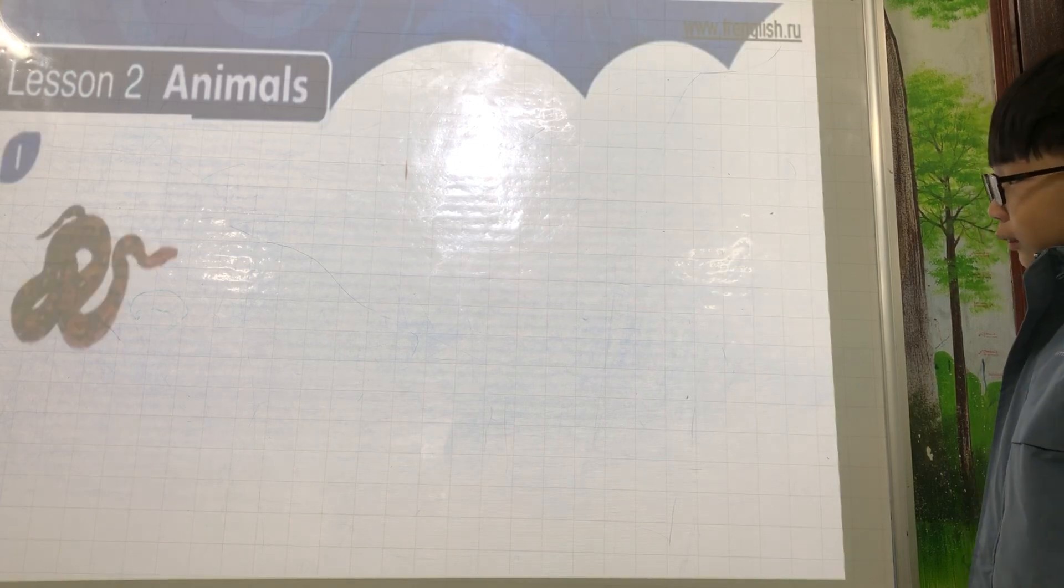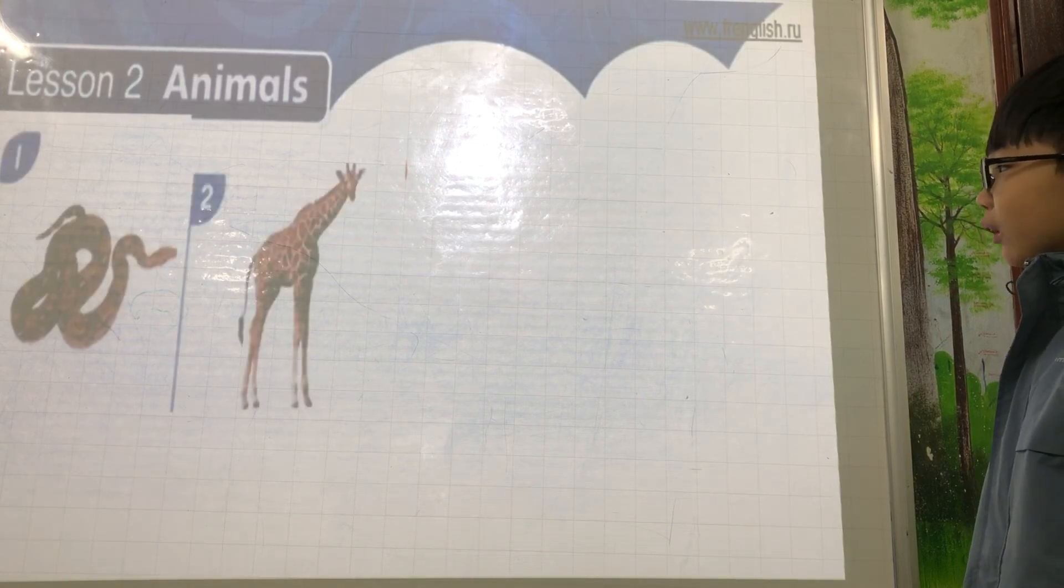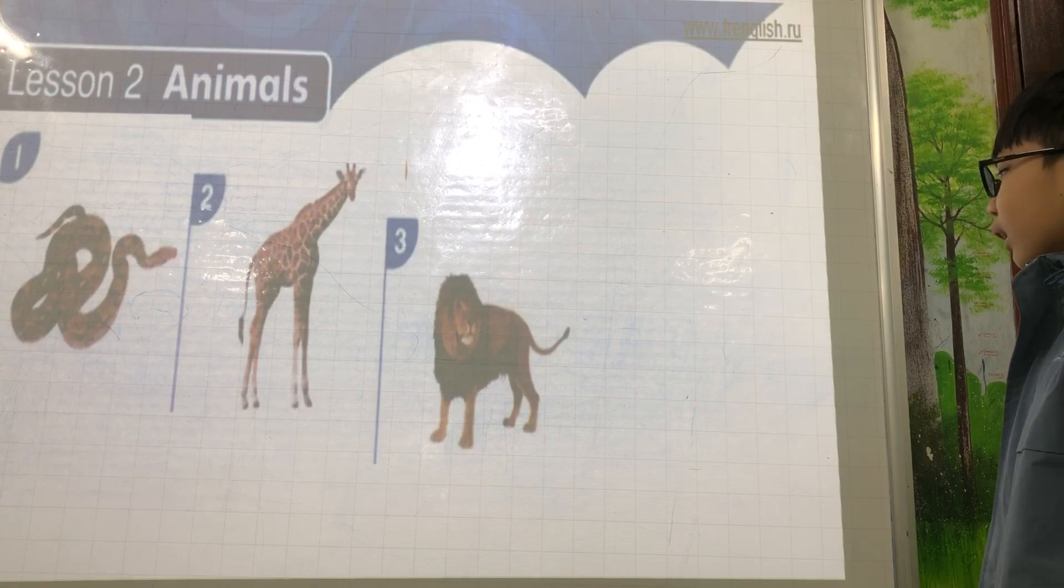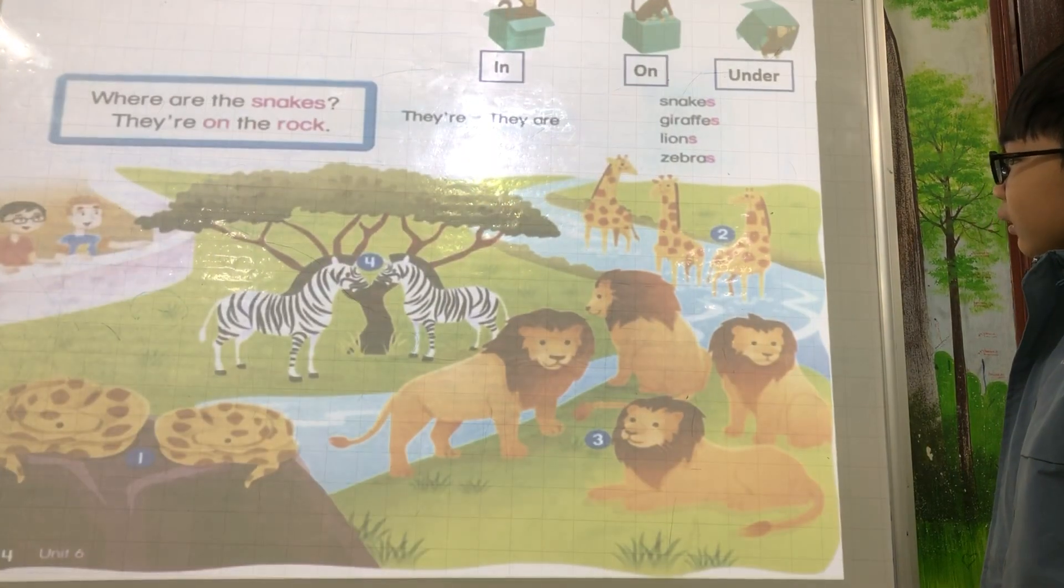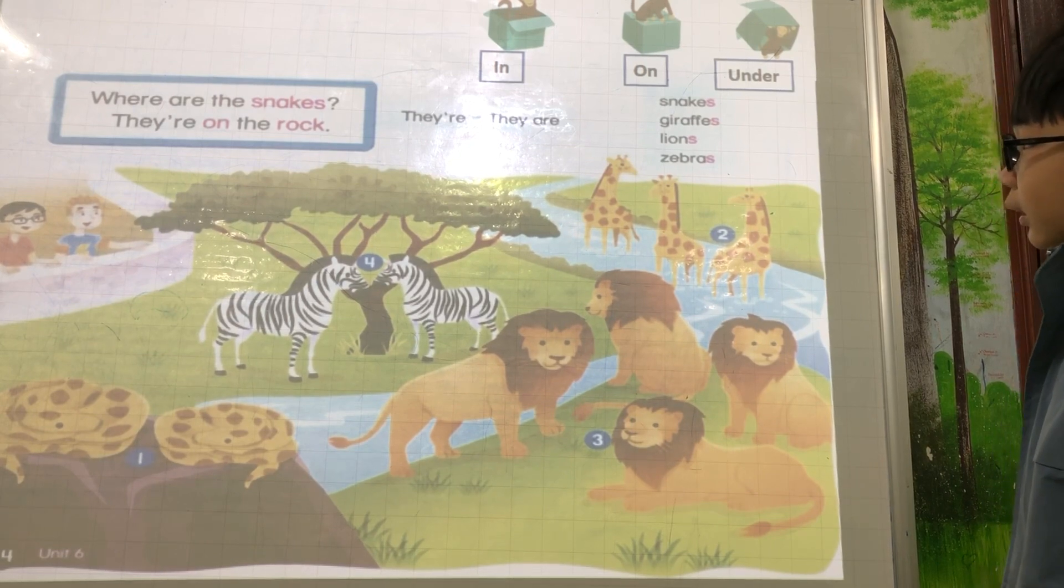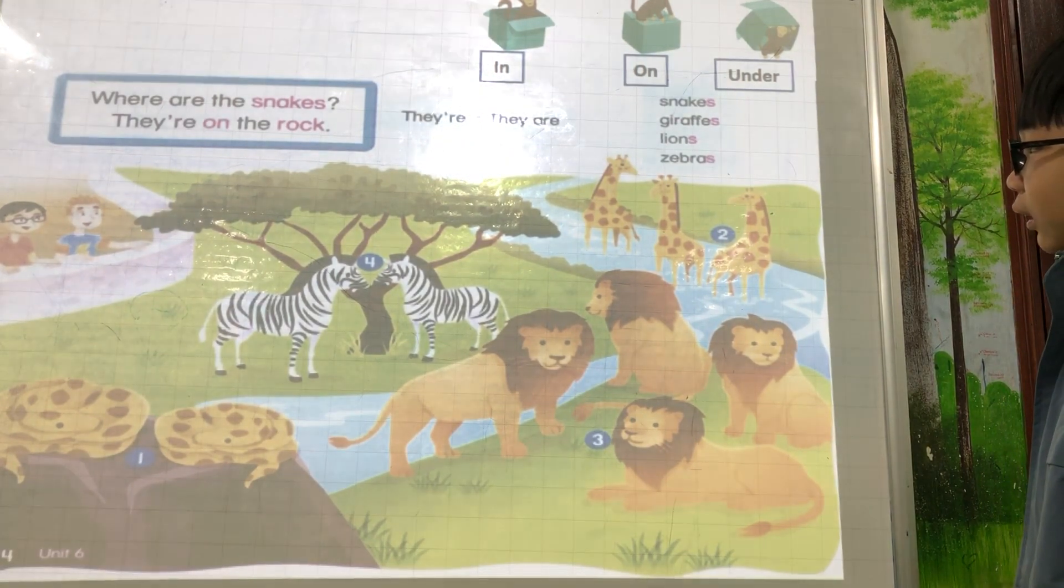And now? Snake. Giraffe. Lion. Zebra. Okay. Picture one. Where are the snakes? They are on the rocks.